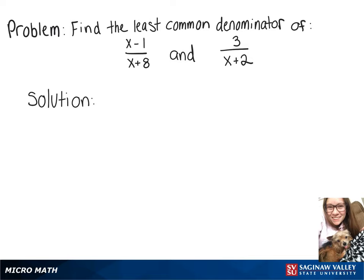In this video, we're going to find the least common denominator of x minus 1 over x plus 8 and 3 over x plus 2. Since we can't factor the denominators at all and they don't have any factors in common, we're just going to multiply the two denominators together. So we're going to do x plus 8 times x plus 2, and that will give us x squared plus 10x plus 16 as our least common denominator.